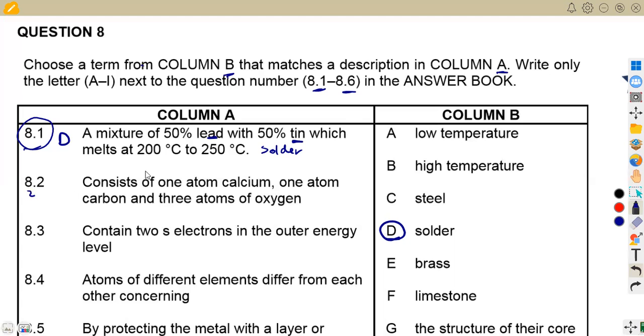8.2, the one that consists of one atom calcium, one atom carbon, and three atoms of oxygen. So we've got calcium, carbon, that's a limestone, guys. Take note, more of calcium and more of carbon. That's a limestone. So limestone, which is on F.